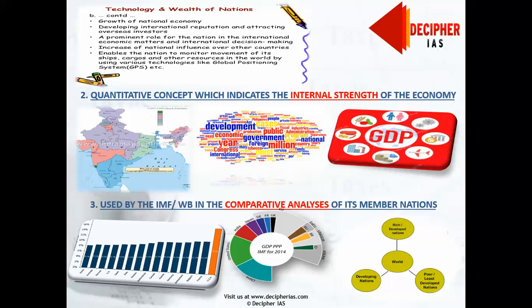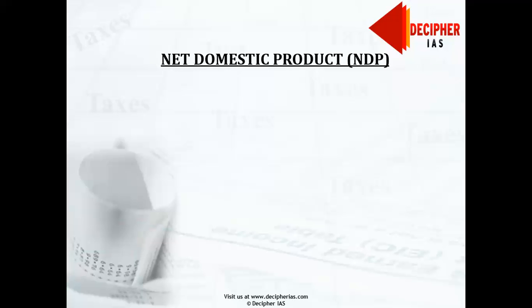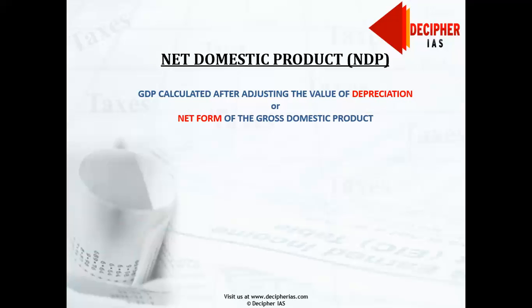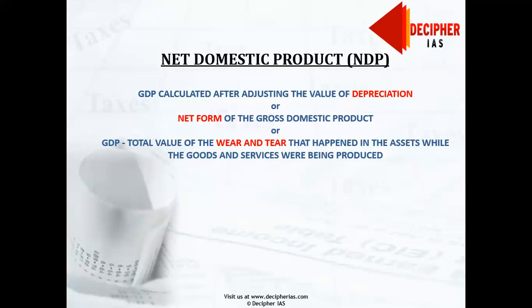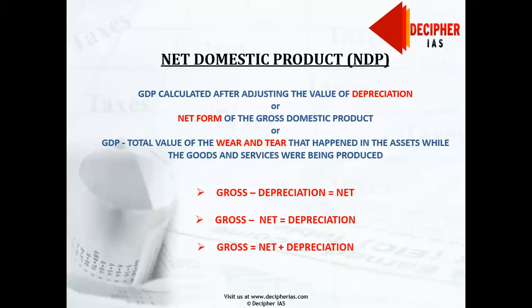The next one is Net Domestic Product, or NDP. Net Domestic Product (NDP) is the Gross Domestic Product (GDP) calculated after adjusting the weight of the value of depreciation. This is basically the net form of GDP — that is GDP minus the total value of wear and tear, i.e., depreciation, that happened in the assets while goods and services were being produced. The formula is: Gross minus Depreciation equals Net. In other forms: Gross minus Net equals Depreciation, or Gross equals Net plus Depreciation.